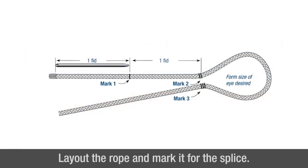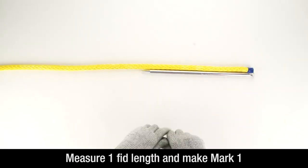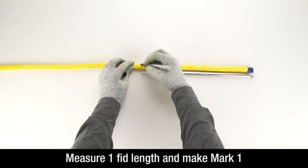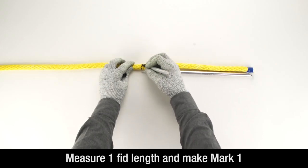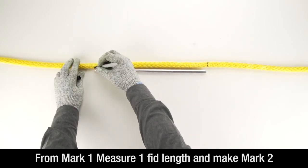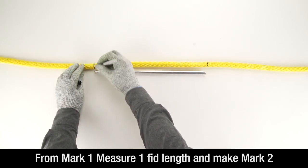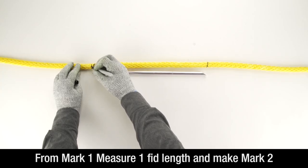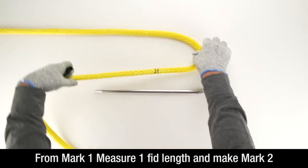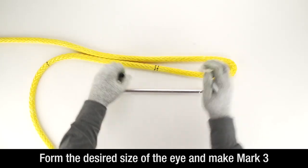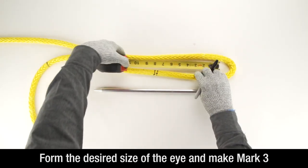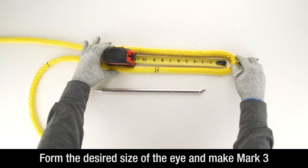To start, lay out the rope and mark it for the splice. From the bitter end, measure 1 fid length and make mark 1. From mark 1, measure 1 fid length and make mark 2. Form the desired size of eye and make mark 3 adjacent to mark 2. In this example, we will make an 8 inch eye.